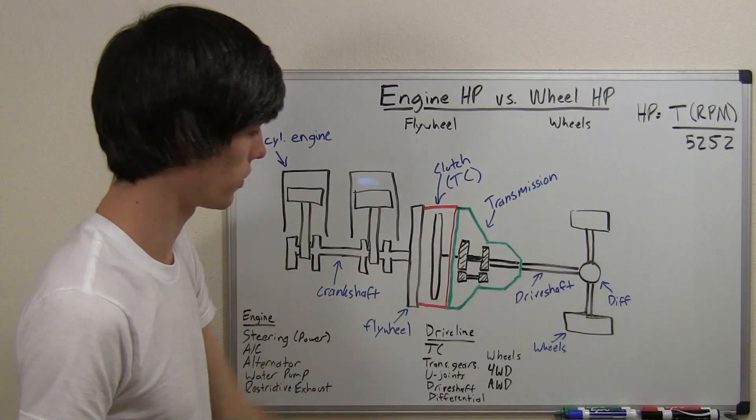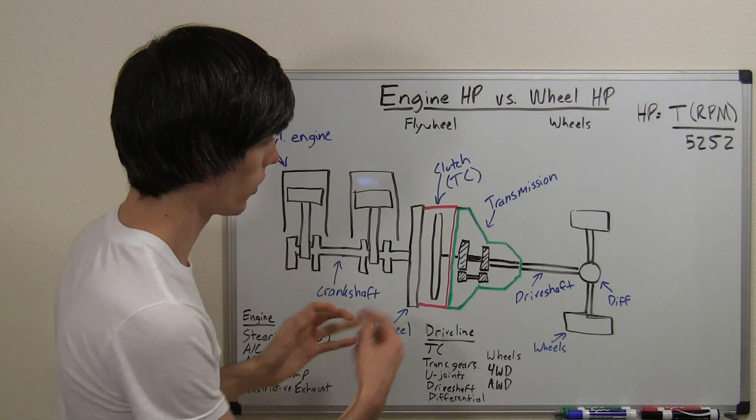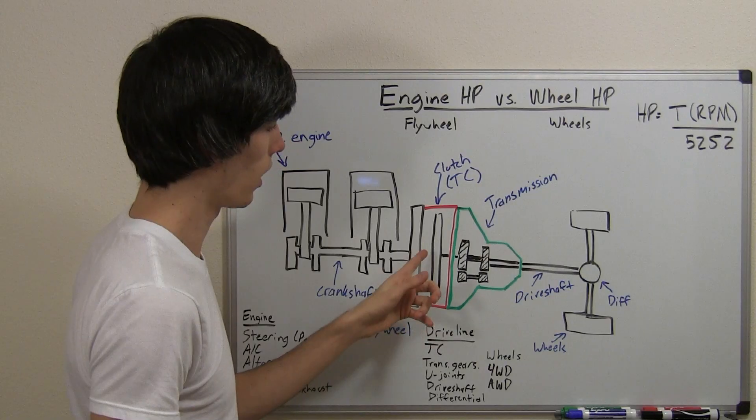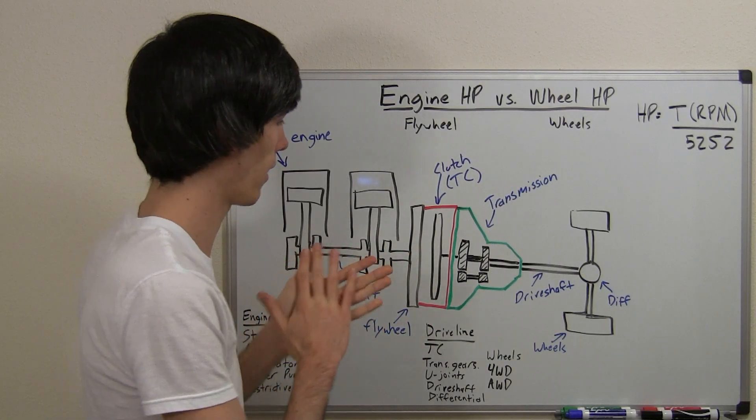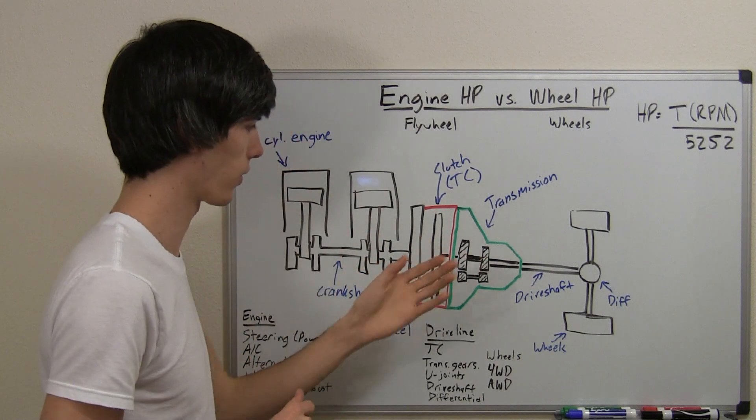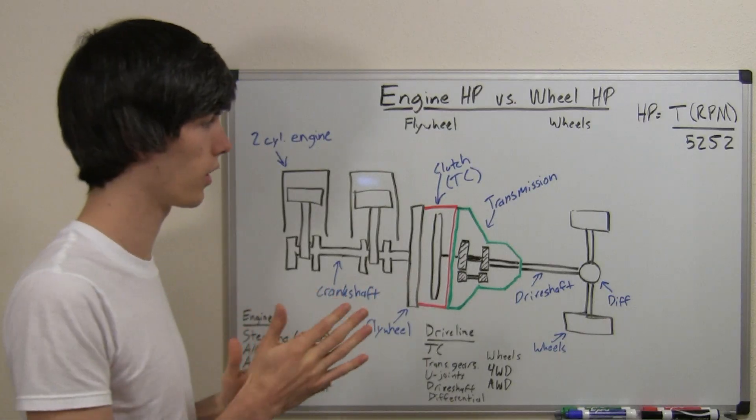Within this whole driveline, we've got all kinds of things that are going to reduce our engine power. Starting with the clutch, this could be a torque converter, and clutches are typically going to have a better efficiency at transferring all of the torque, whereas a torque converter is spinning in a fluid, and so there will be frictional losses.